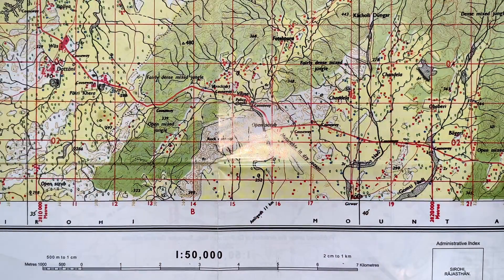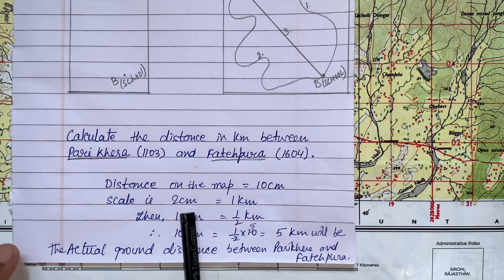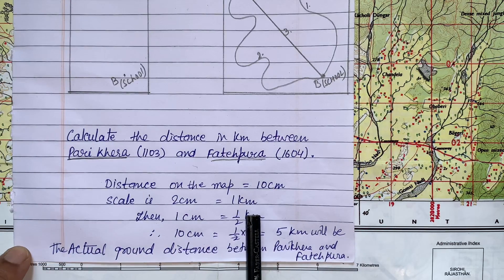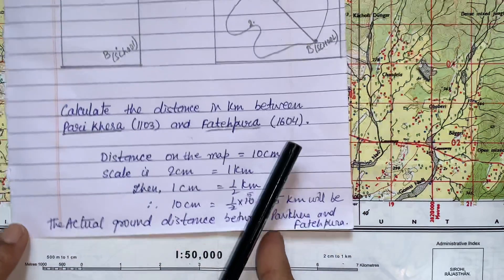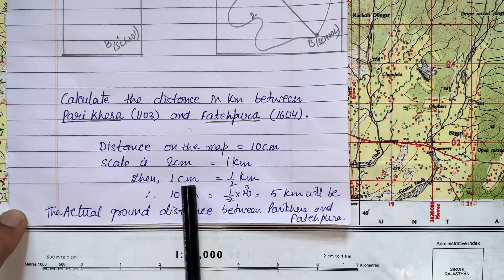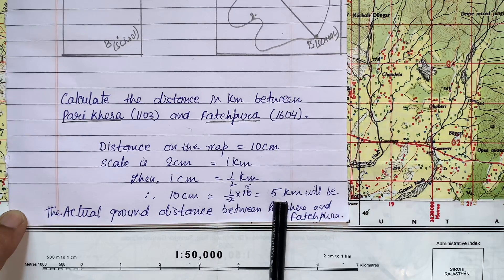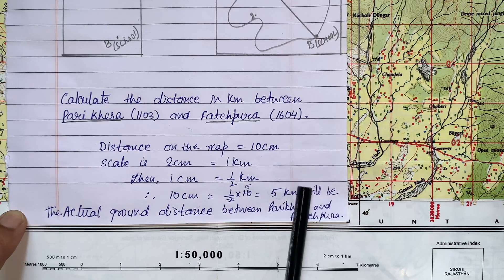You can see that from here to here it is showing ten centimeter distance. This ten centimeter I have already written here. Then what we will do, we know the scale is two centimeters is equal to one kilometer. You can see it is written here also, in each and every map at the bottom it is written.